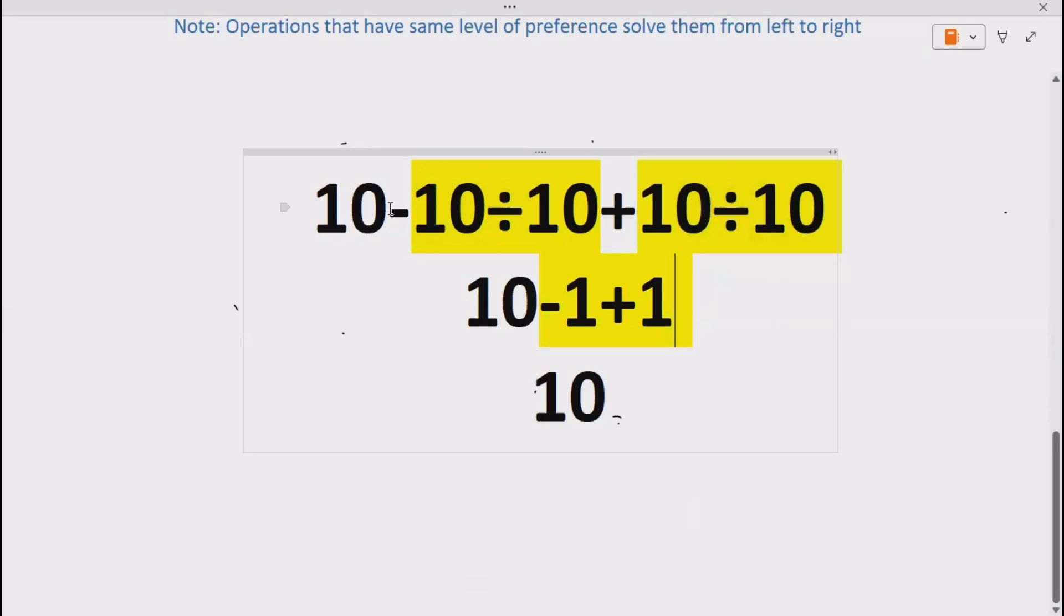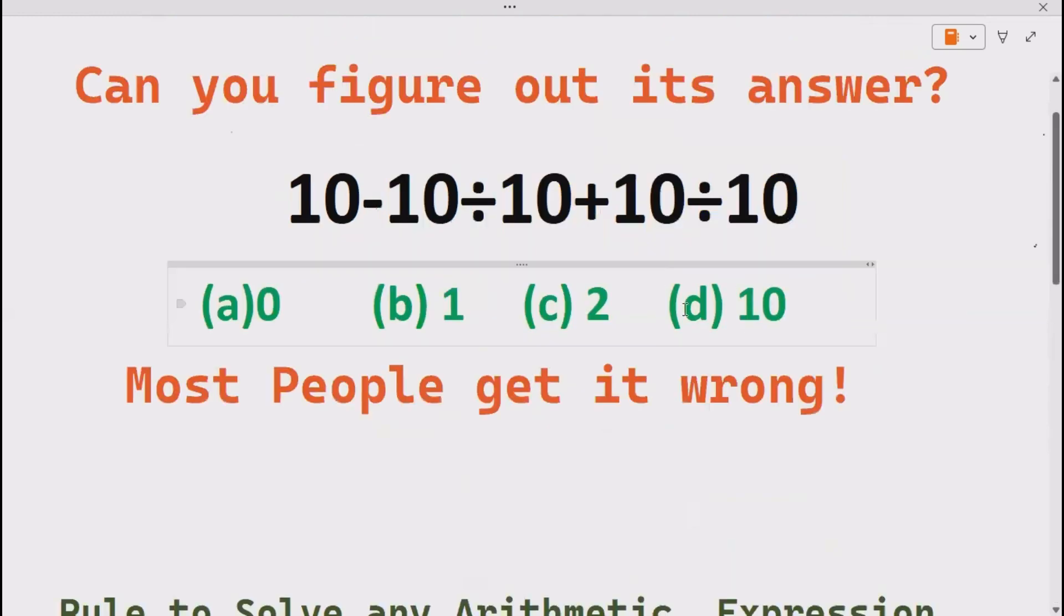So actually you can see this is with the minus 10 divided by 10. This is with the plus 10 divided by 10. So we can directly cancel out but I can solve it for your convenience. So we have minus 1 and plus 1. Now, minus 1 plus 1 cancel out, the only thing left is 10 i.e. our answer is D.